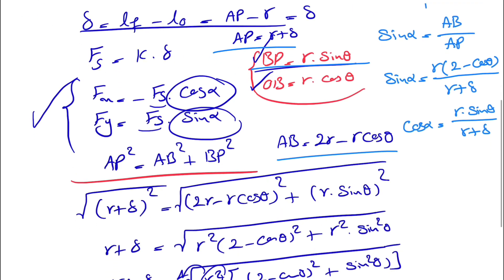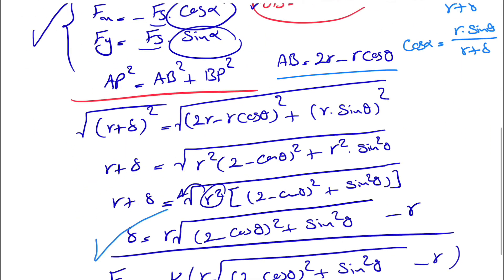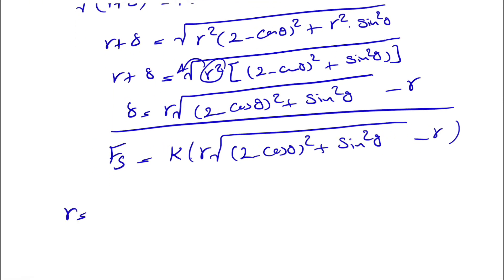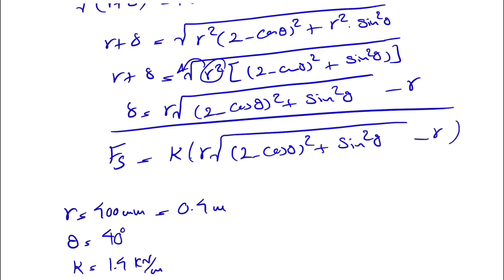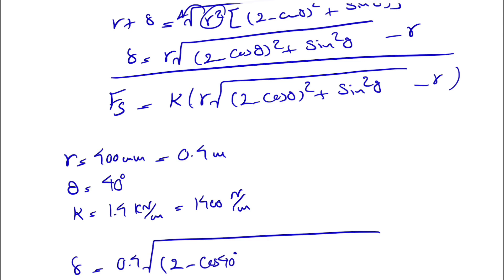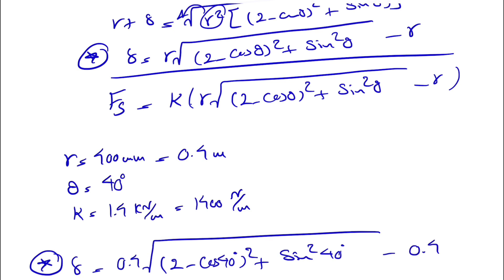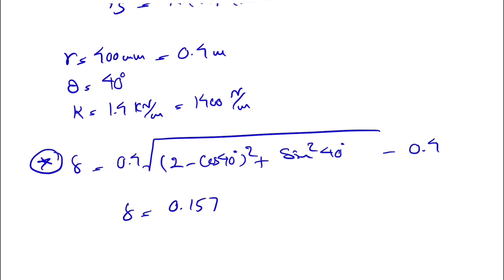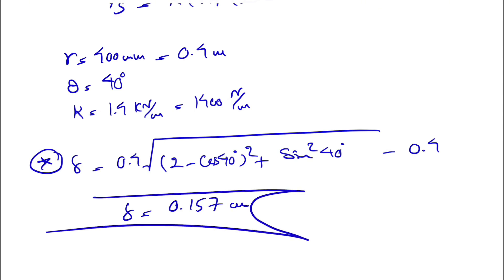The given values are: r = 400 mm = 0.4 m, θ = 40°, and k = 1.4 kN/m = 1400 N/m. We can now find delta: δ = 0.4 × √[(2 − cos(40°))² + sin²(40°)] − 0.4. Plugging in the numbers gives δ = 0.157 m, which is the extension of the spring.